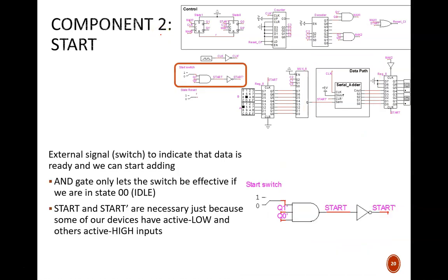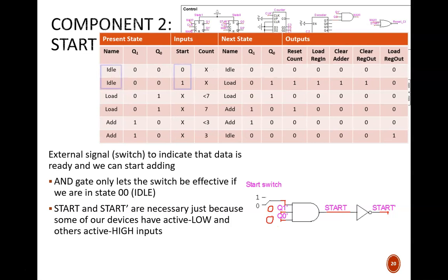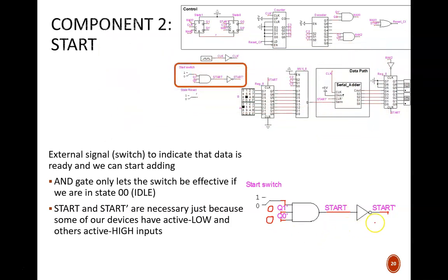The second component is the start switch. This is the only external signal for our machine. Notice that the switch feeds into an AND gate, which makes the switch meaningful only if in idle mode, when Q1 and Q0 are both low. This was identified in the next state table, where start is a don't care condition except in idle mode. Also note that there is a start and start prime signal. This is simply because some of the other devices in the circuit are active low and others active high. This allows us to feed the appropriate signal to the appropriate port.